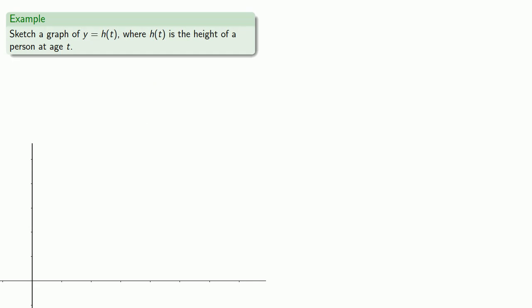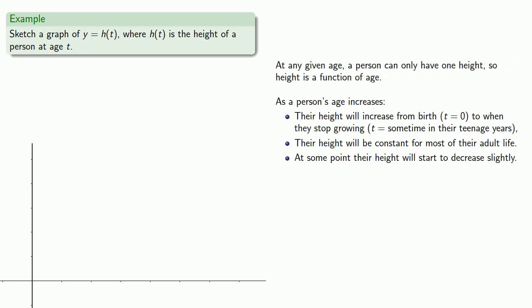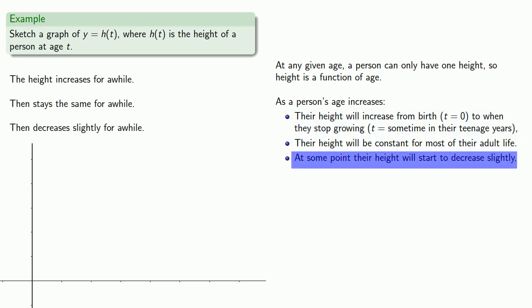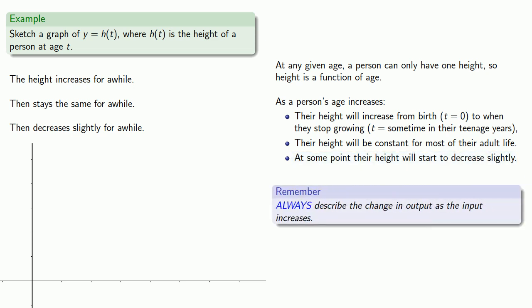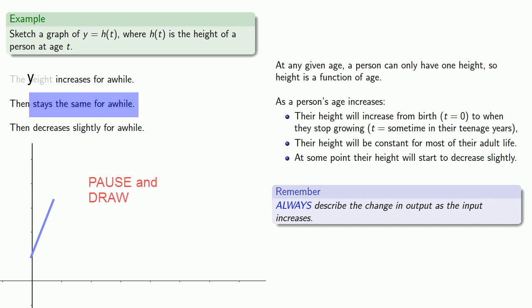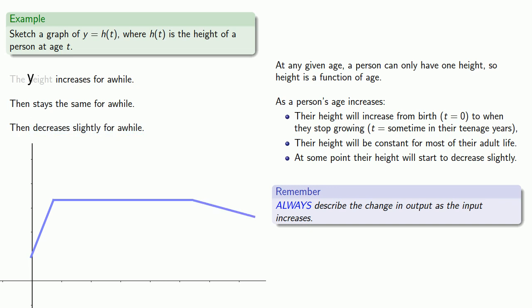So we have an idea of what happens to this height function. To sketch a graph of y equals h of t, we use our information about what happens to h of t. The height increases for a while — as we move right, the y values increase, we go up. Then the y values stay the same as we continue right. Then if we continue to go right, the y values decrease. So our graph should look something like this.